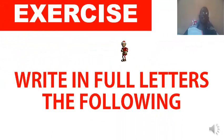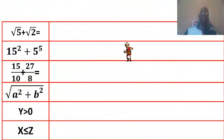Exercise. Write in full letters the following expressions. So, write the expressions that are here in letters. How to read in English? Square root of 5 plus square root of 2 equals. 10 squared plus 5 to the power 5, etc. So, press the pause button. Do this exercise. Good luck.